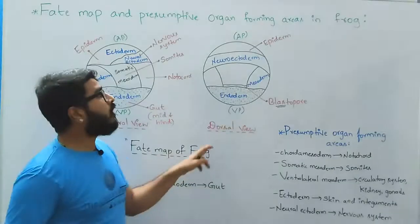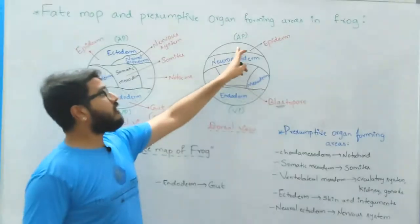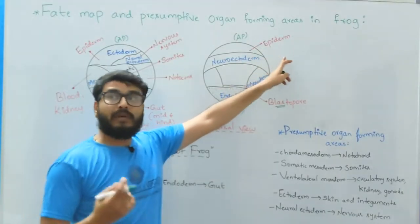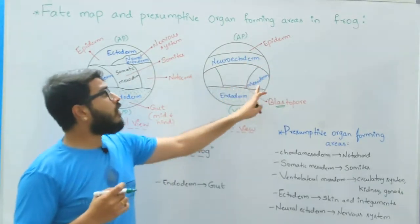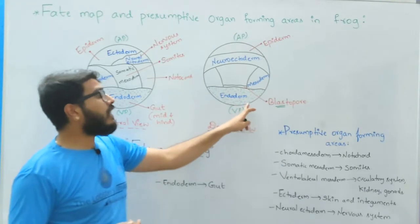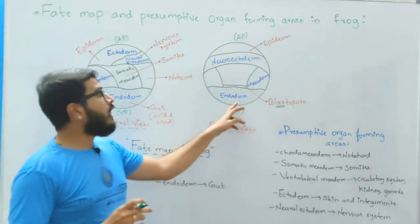Similarly, the dorsal view of the fate map of the frog shows distinct regions, out of which the first region is the epidermis, the second one is called as neuroectoderm, third one mesodermal region, and the last one the dense region that is called as endoderm.